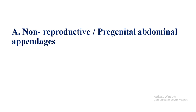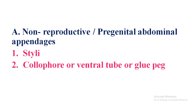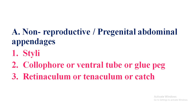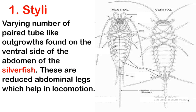Now we'll look at each appendage one by one. For non-reproductive or pregenital appendages, the key names to revise are: styli, colophore or ventral tube or glue peg, retinaculum or tenaculum or catch, and furcula or furca. These names are critical. So what is styli?